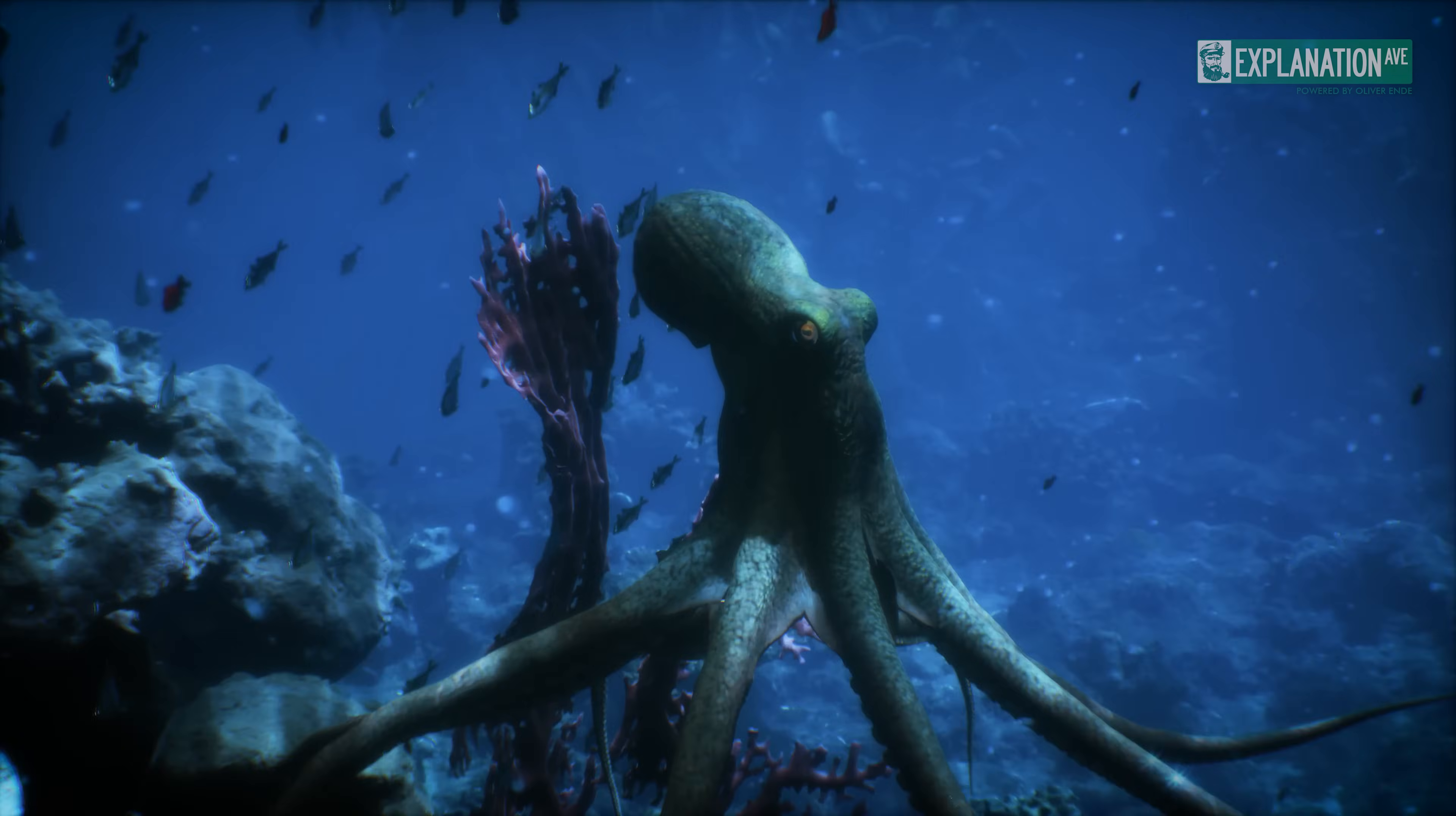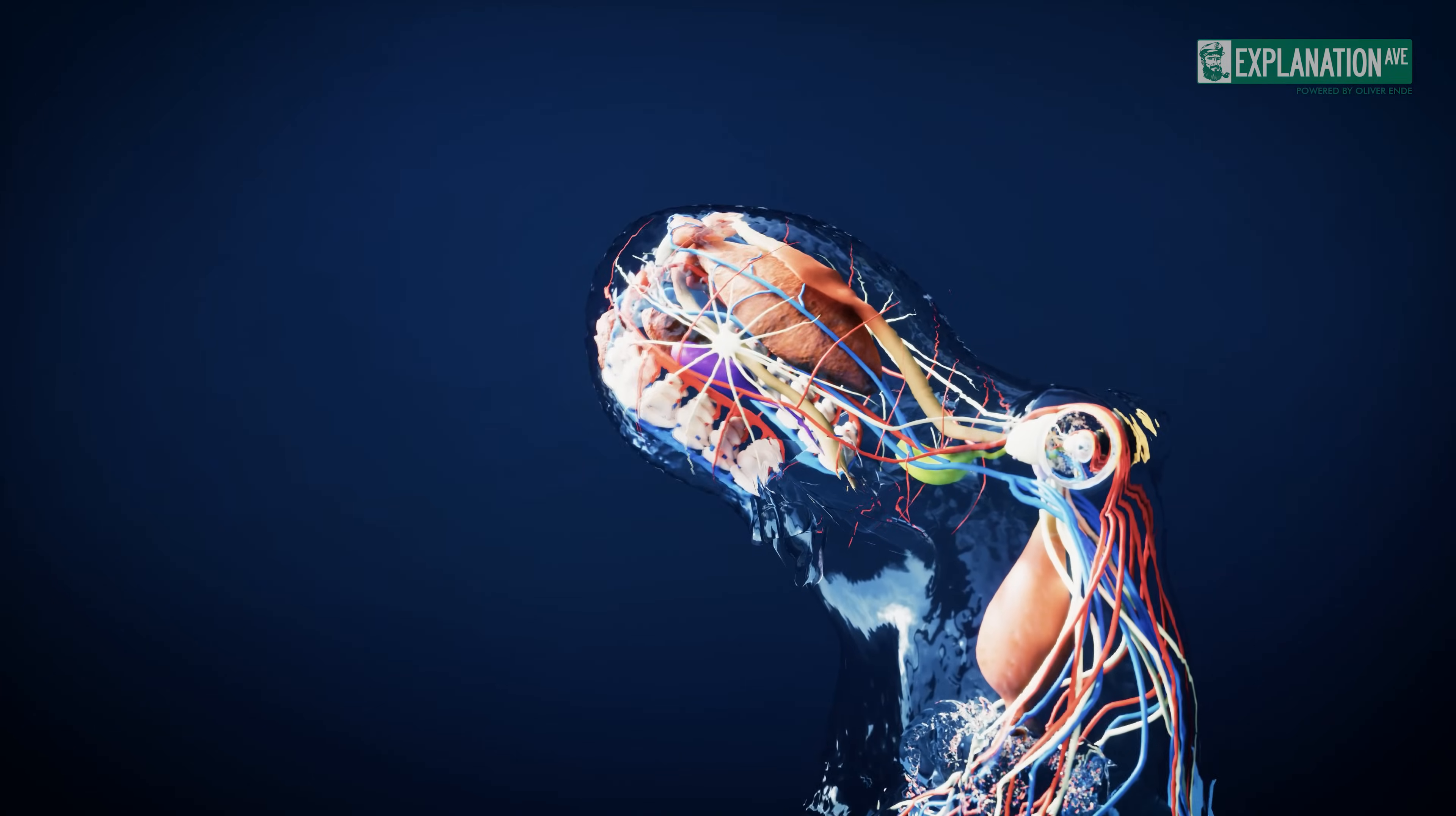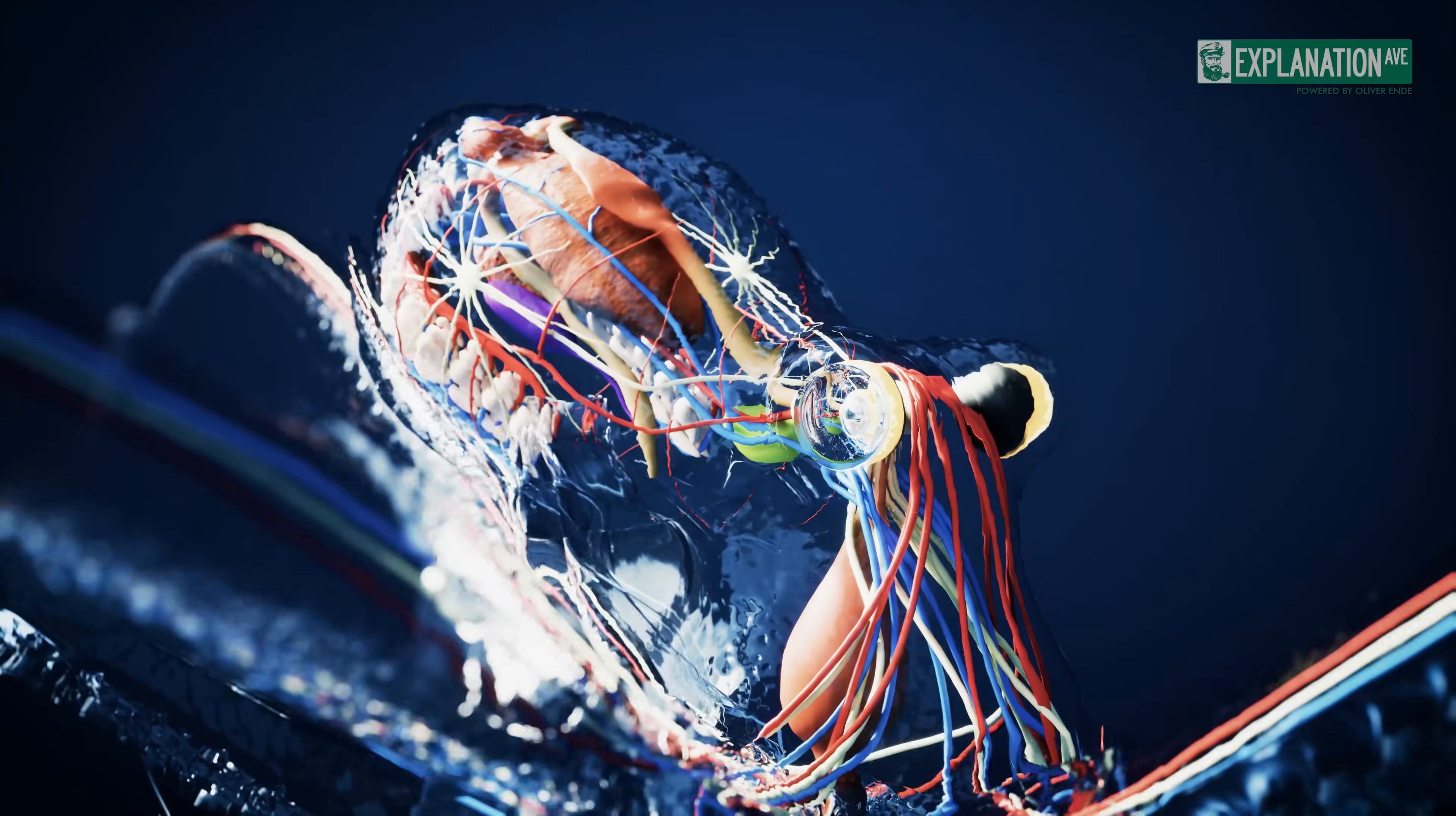The body of the octopus mainly consists of two parts: the mantle and the eight tentacles. The mantle is a heavily muscled, sac-like structure that contains all the major organs such as the kidneys, mid-gut gland, gills, stomach, intestines, brain and reproductive organs. These strong muscles not only protect the organs but also support the animal's breathing and contraction.